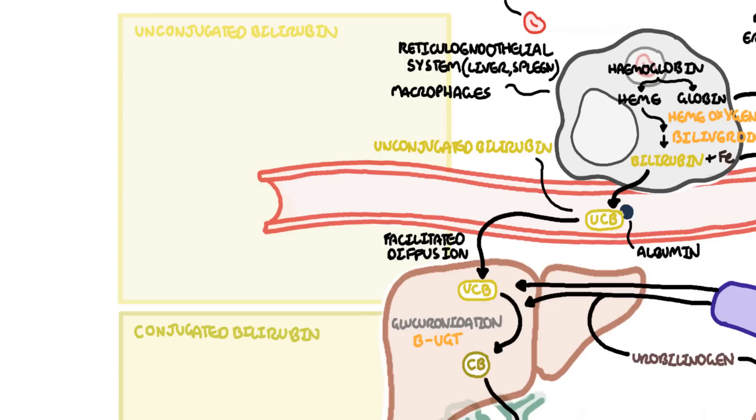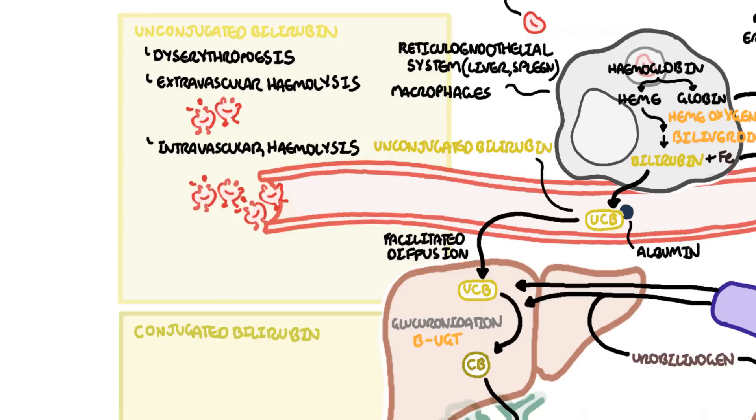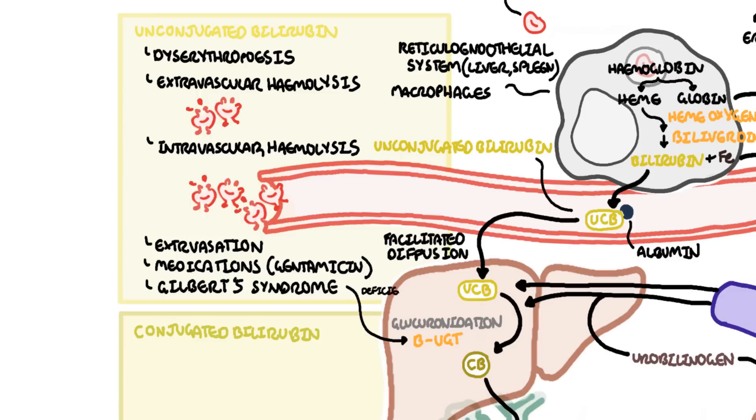Disorders associated with mainly unconjugated bilirubinemia include things that do not really involve the liver. For example, ineffective erythropoiesis, which is abnormality of red blood cell production, and release of bilirubin into circulation. Extravascular hemolysis, which is death of red blood cells outside the vessels. Intravascular hemolysis is damage of red blood cells within the vessel. Extravasation is when red blood cells go into the tissues causing bruising and leakage of bilirubin. Certain medications such as gentamicin and some antiretroviral drugs can elevate unconjugated bilirubin levels. And then you have Gilbert syndrome, which is deficiency in bilirubin UGT, which means you have high amounts of unconjugated bilirubin and yellowing of the skin.